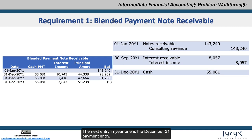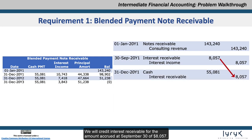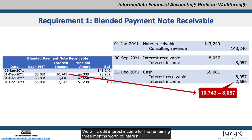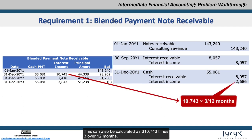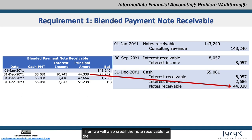The next entry in Year 1 is the December 31st payment entry, where we will debit cash for the amount received of $55,081. We will credit interest receivable for the amount accrued at September 30th of $8,057. We will credit interest income for the remaining three months' worth of interest from October 1st to December 31st inclusive, which is the $10,743 total Year 1 interest less the $8,057 previously accrued amount, which equals $2,686. This can also be calculated as $10,743 times 3 over 12 months. Then we will also credit the note receivable for the principal amortization in Year 1 of $44,338.